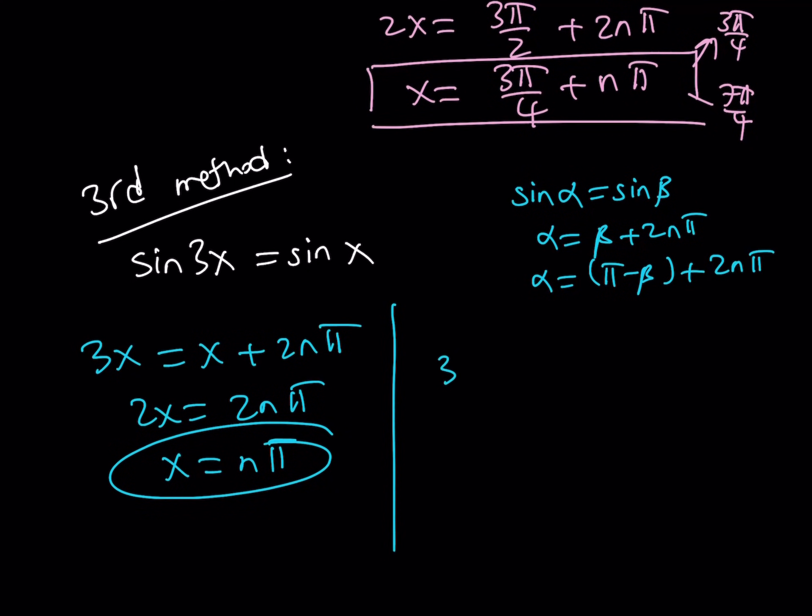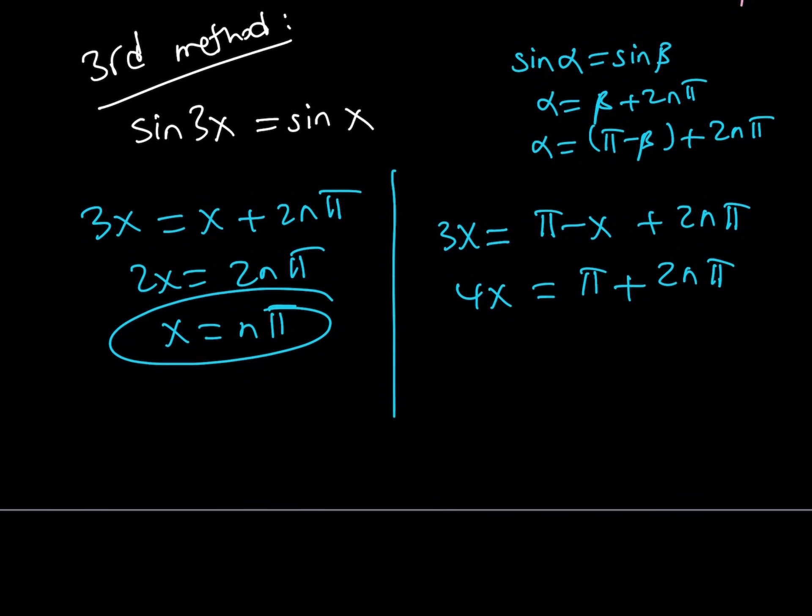That should be no surprise. Or, 3x can be written as pi minus x plus 2n pi. Put the x's on the same side, and something interesting is going to happen. So, I'm going to show you a more compact way to express the second set of solutions. And, at the end, I'm going to show you something visual.